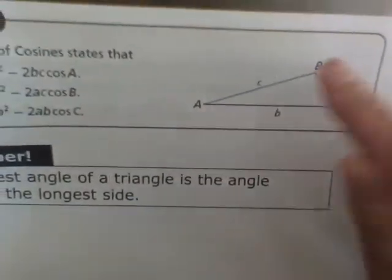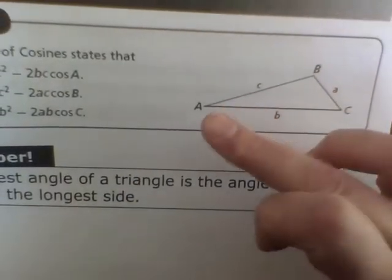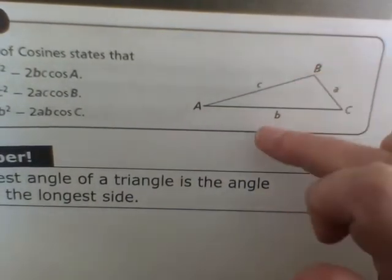So here's your non-right triangle that we're talking about. And remember, angle A is across from side A, angle B across from B, and then C across from side C.